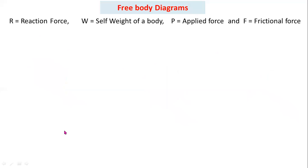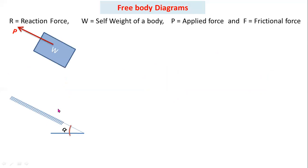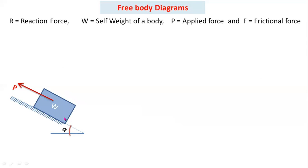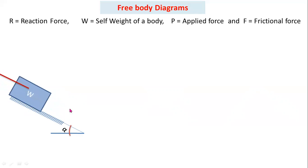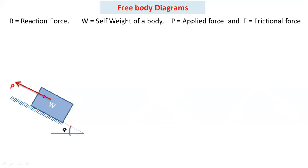Now, for the second condition: a rough inclined plane makes an angle alpha with respect to the horizontal. I am placing a block of weight W, and applying a pulling force parallel to the inclined plane. When you apply the pulling force, the direction of motion of the block is upward along the plane. You have to convert this given diagram into a forces diagram — a free-body diagram.